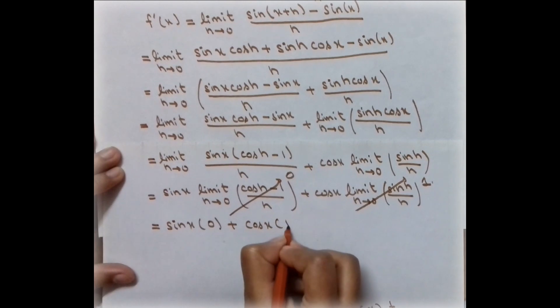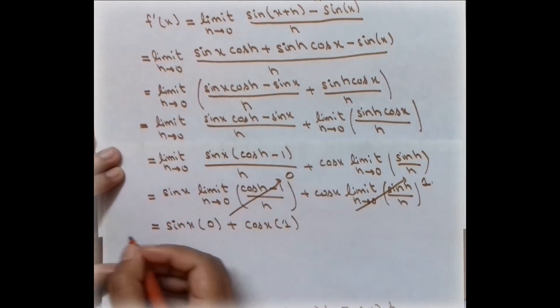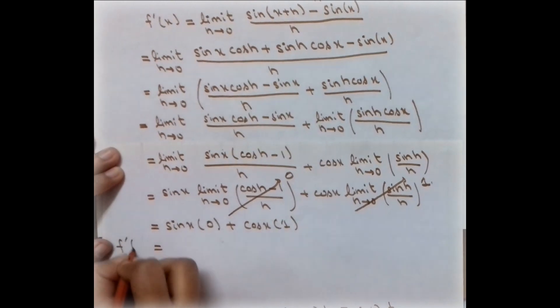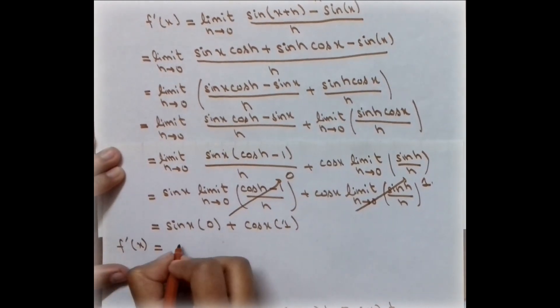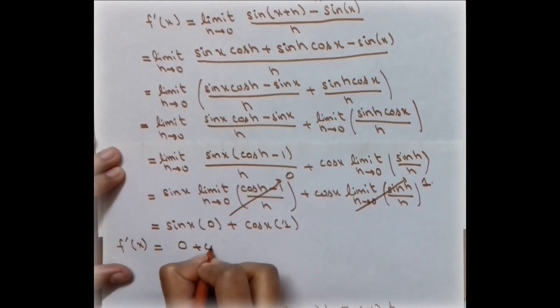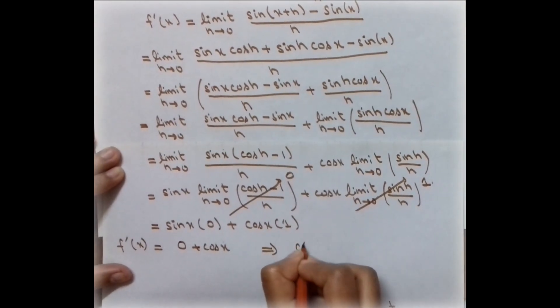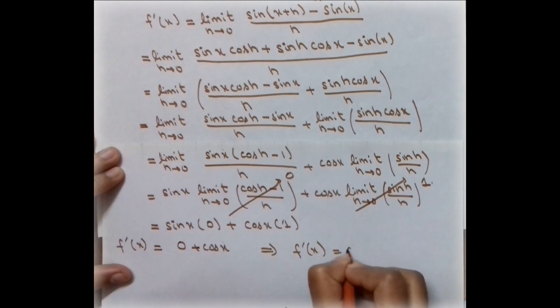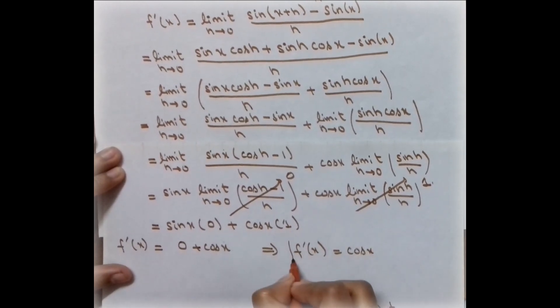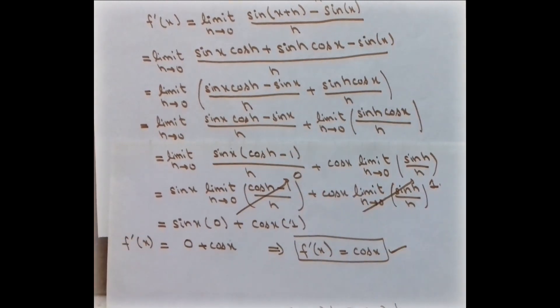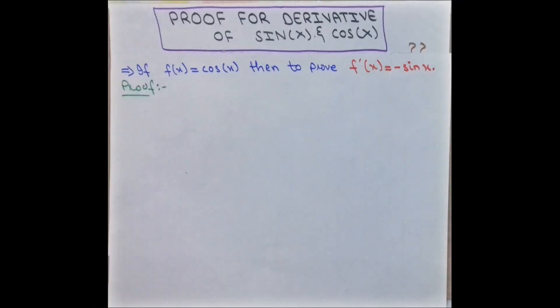Substituting these results: sin(x) multiplied by 0 is 0, plus cos(x) multiplied by 1. So the final answer is 0 + cos(x) = cos(x). We have proved that if f(x) = sin(x), then its derivative is cos(x), using the first principle method.